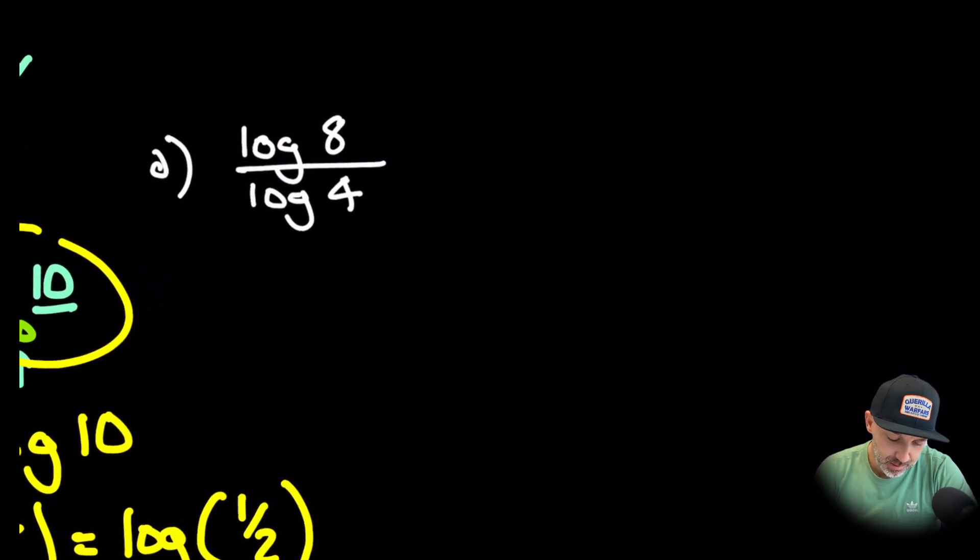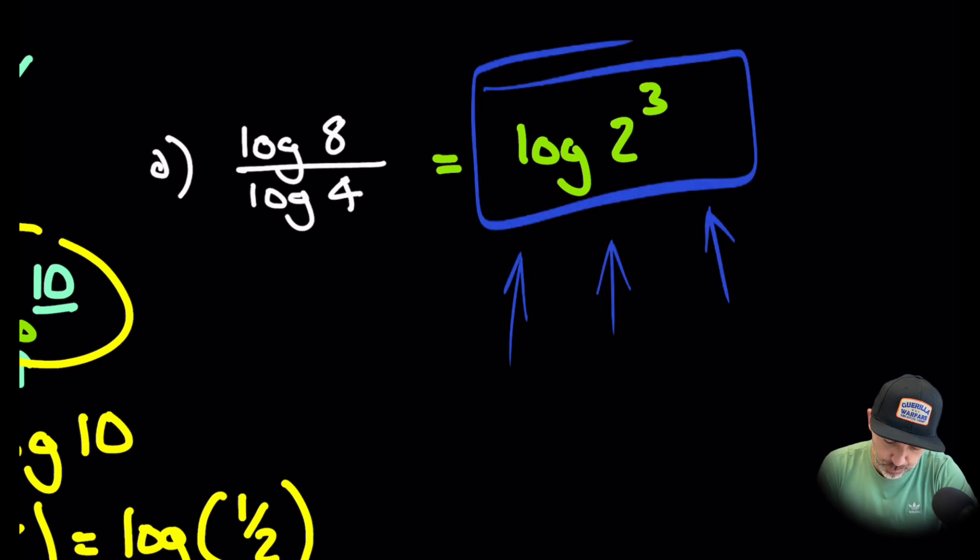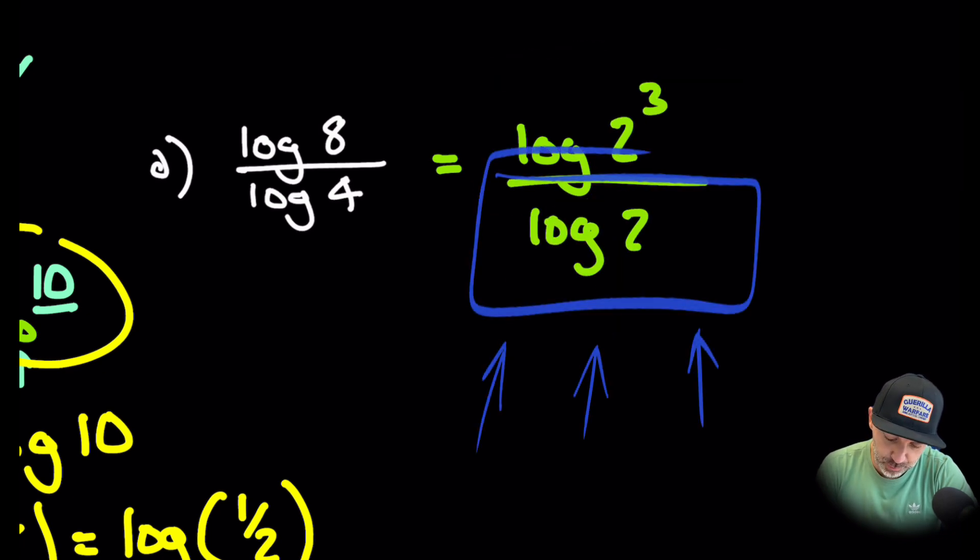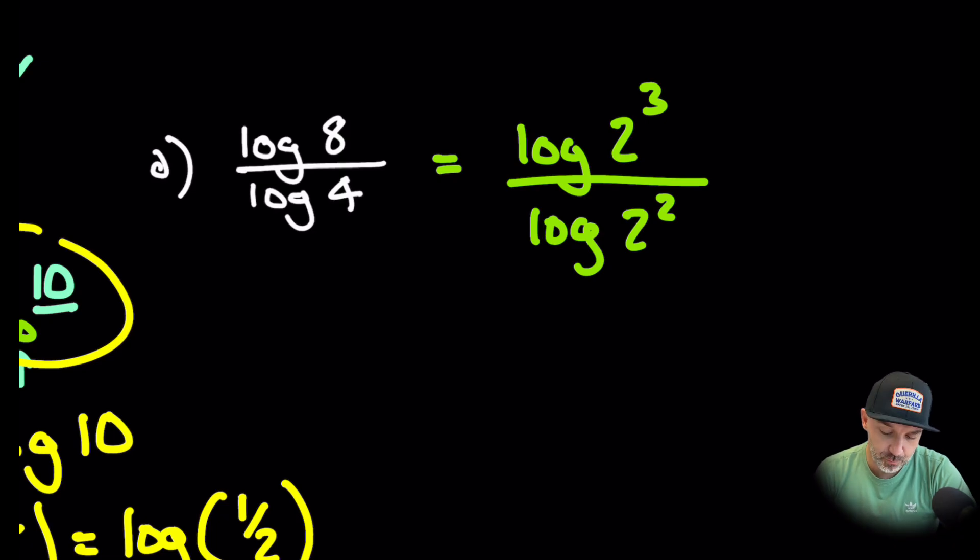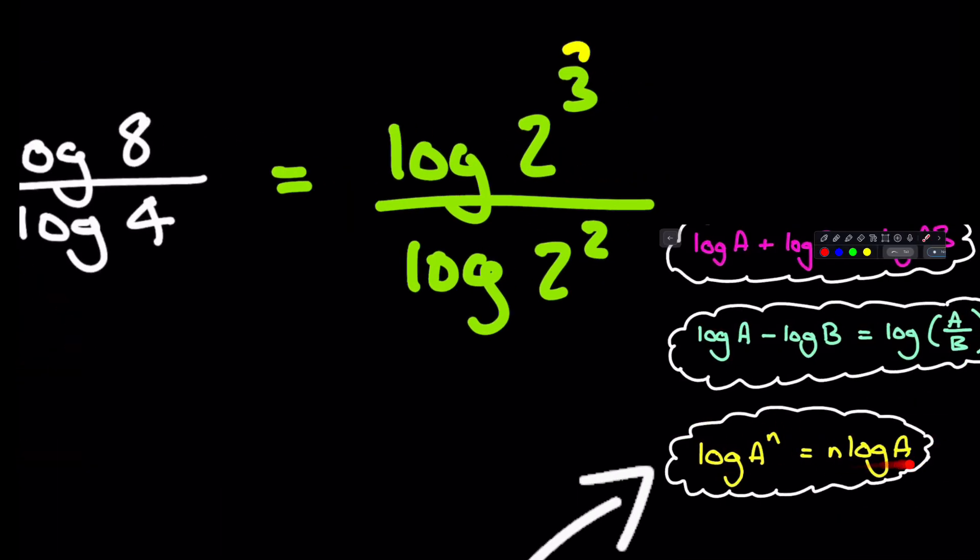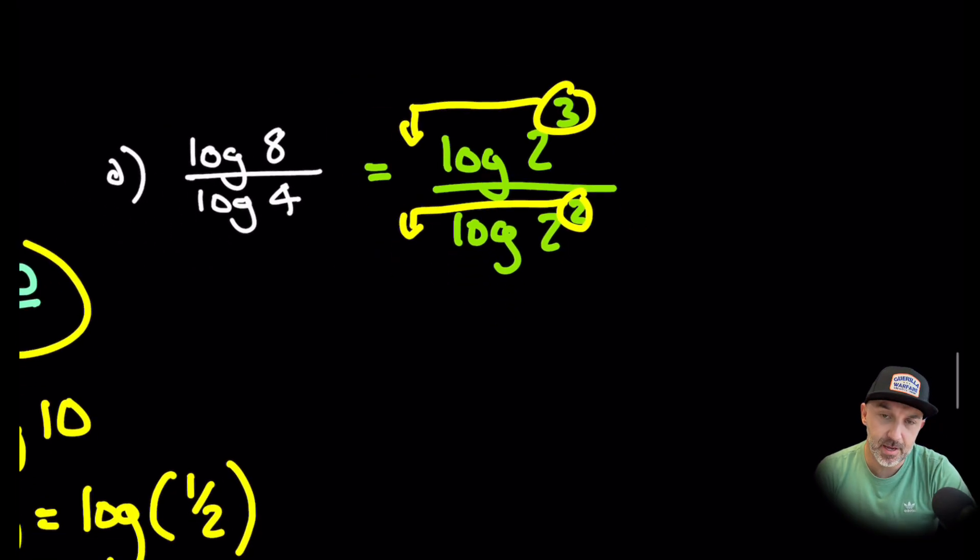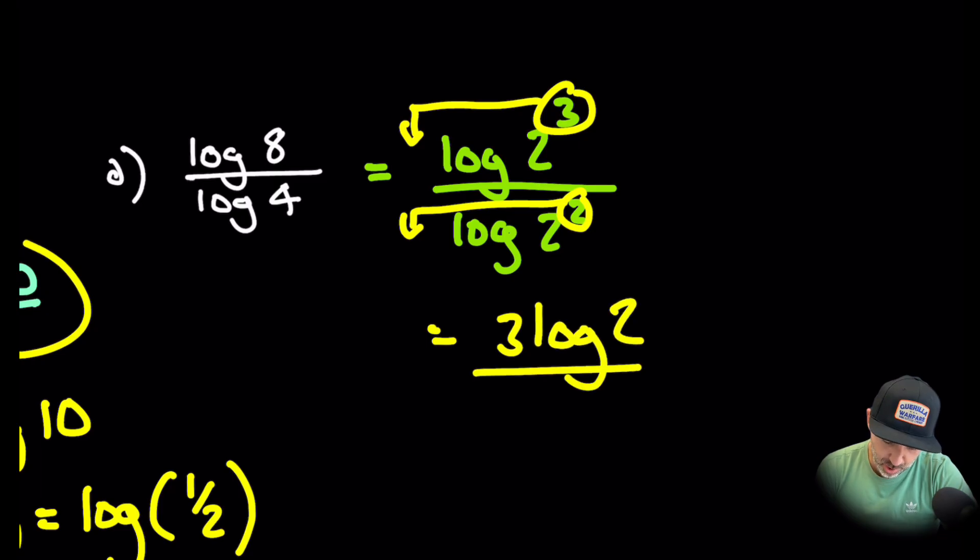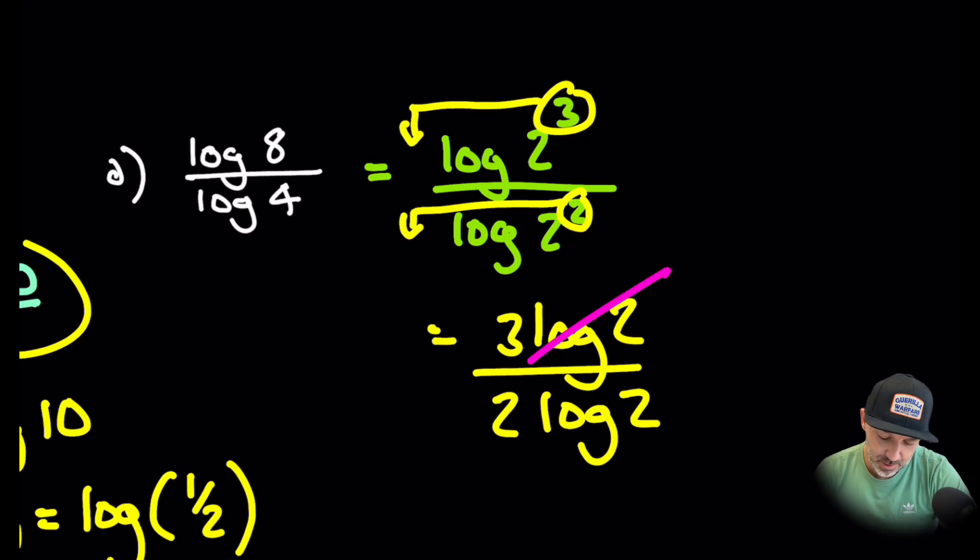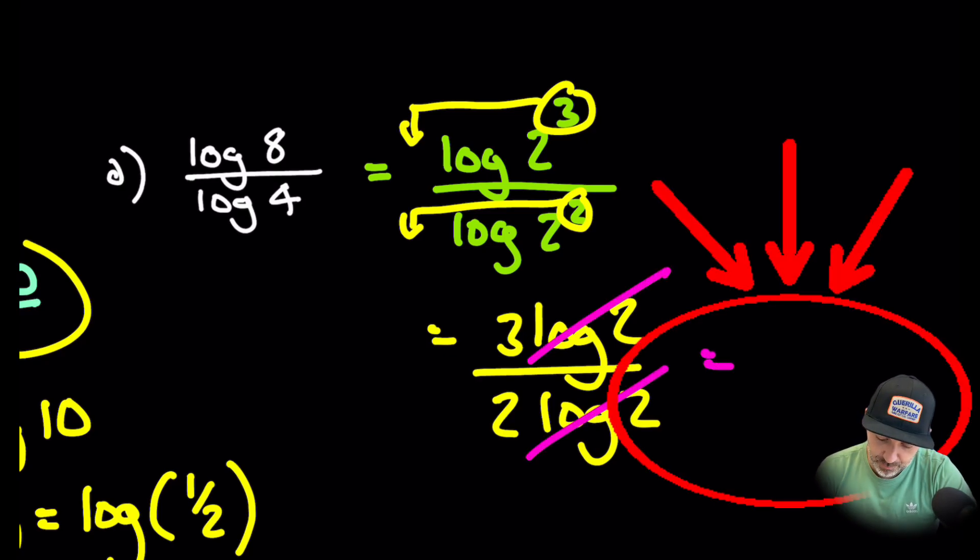Over to 2d, we have to simplify this down. We can write this slightly differently. This is log 2 cubed over log 2 squared. One of the rules was the power rule, we could bring down this power and place it in the front, and that goes for both sections here. If we did that, we would be left with 3 log 2 over 2 log 2. Because the log 2s are exactly the same value, they will cancel leaving us just with 3 over 2, and that would be the answer to d.